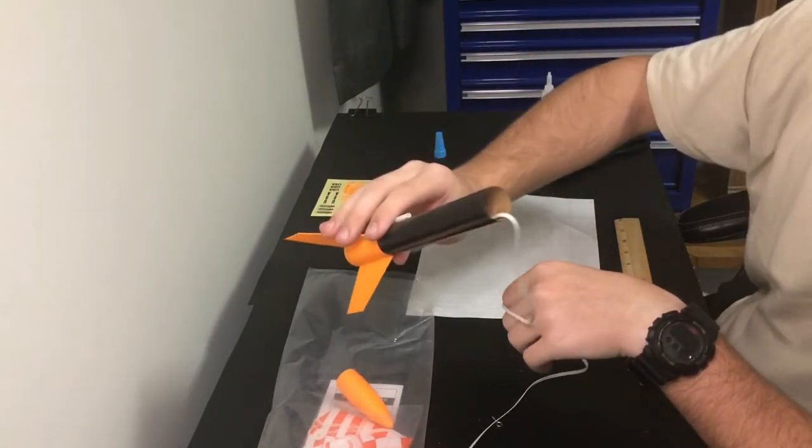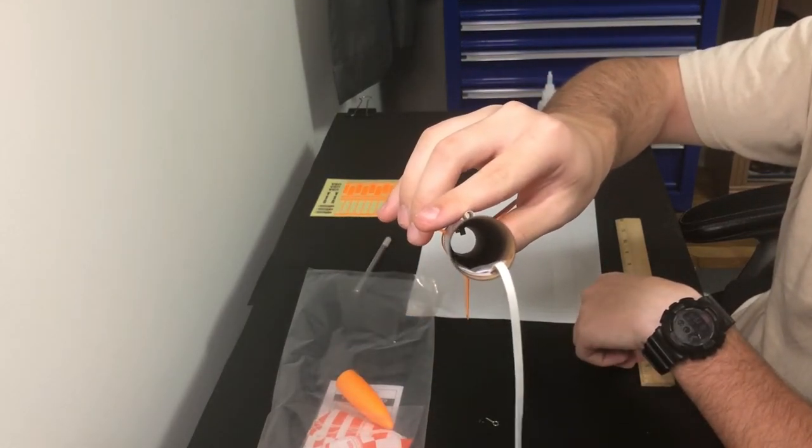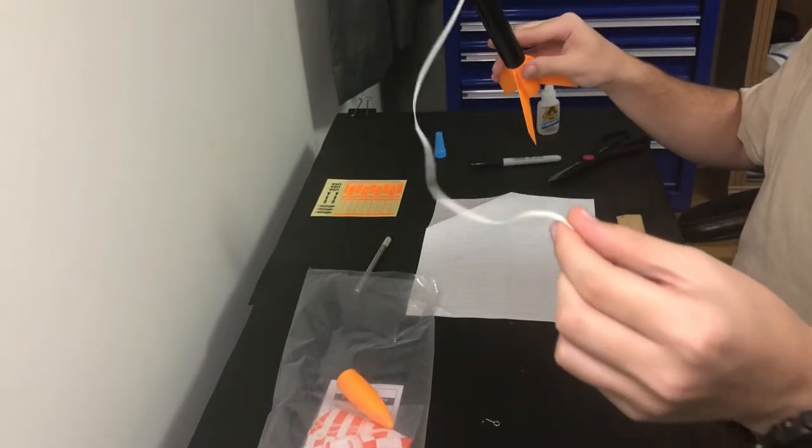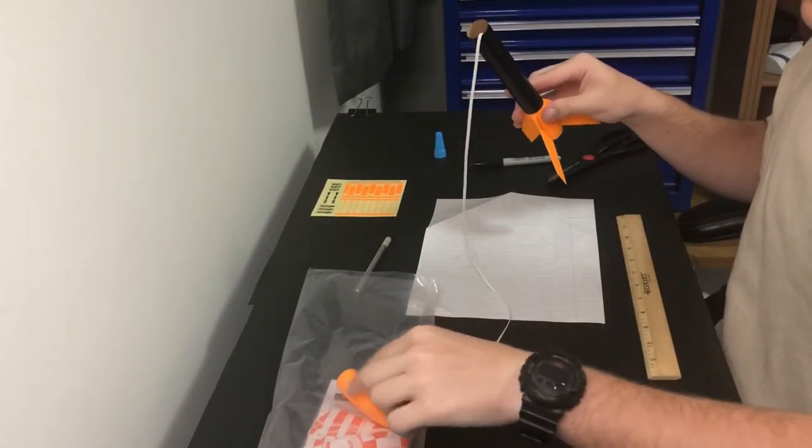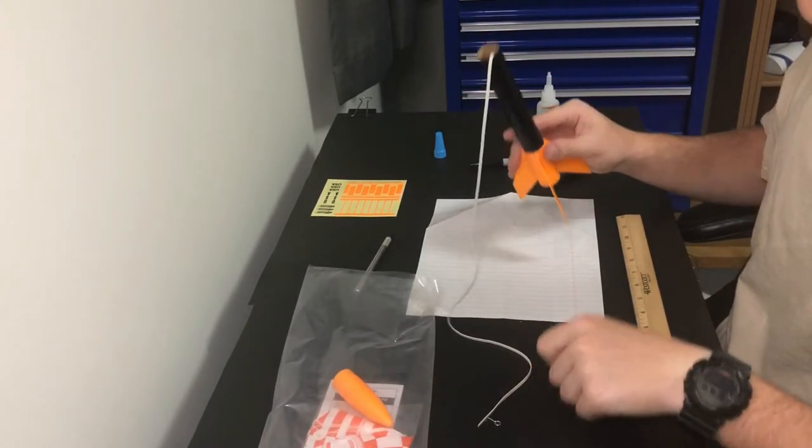So I got it in the tube, maybe you can see how far deep that is in there. It's important that this is really stuck because this is what's going to be attaching the nose cone to the body of the rocket and holding the weight of the rocket.